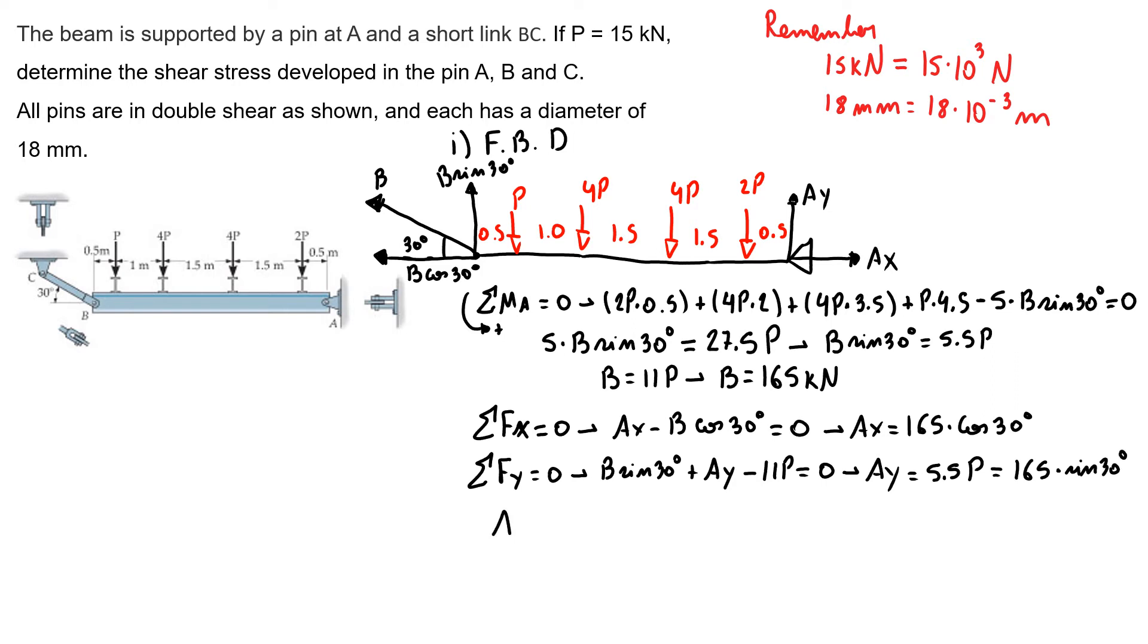So to find my A reaction, A reaction equals Ay. So my A reaction is the same as B reaction, that's 165 kilonewtons.